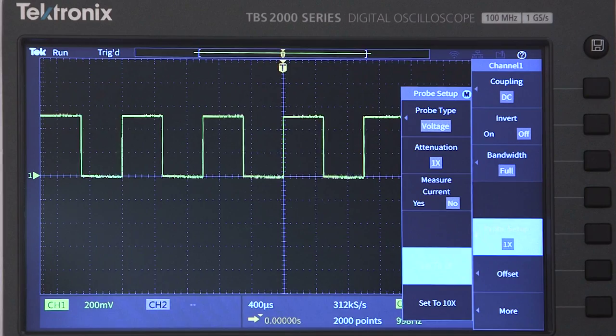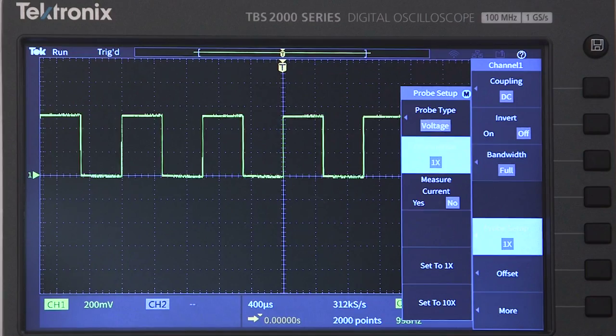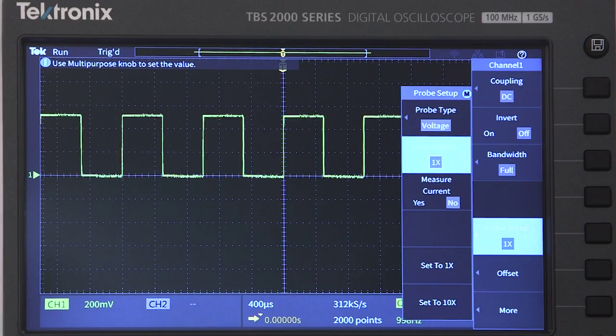Most of the time, you'll be measuring voltage waveforms, but in some cases, you may want to measure current. In these situations, you can set the probe type to current, and the scope will display amps instead of volts.